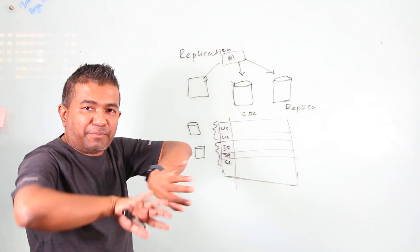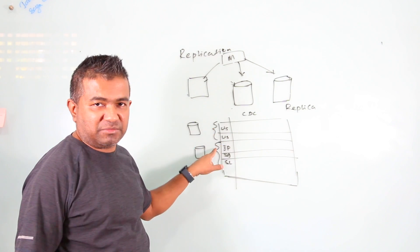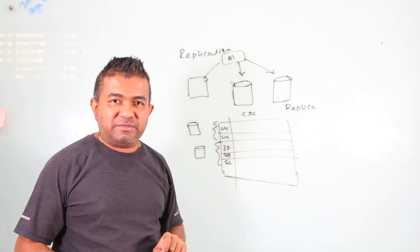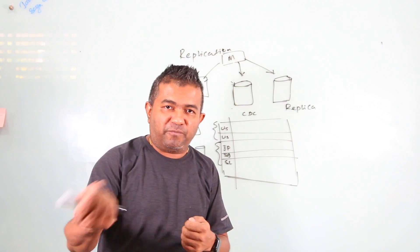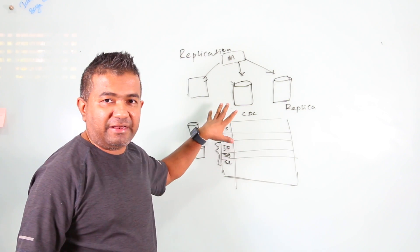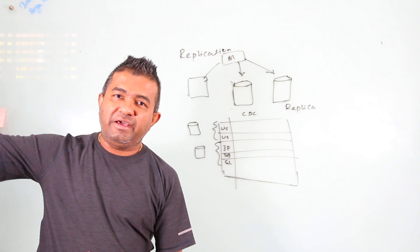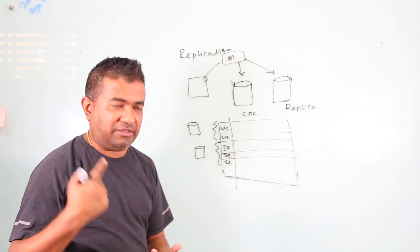So this way you're geographically separating the data based on the customer location. Because then, US customers, it will add more performance to the system. Why? Because they can read the data fast because their data is coming from the same region. They don't have to come to Asia and fetch their data. That's one.